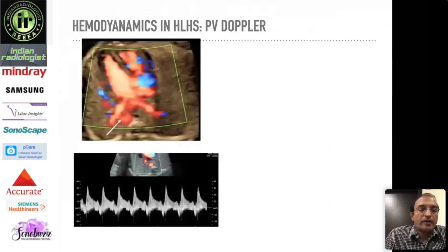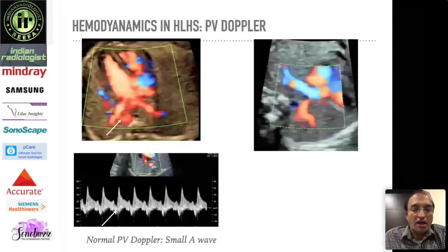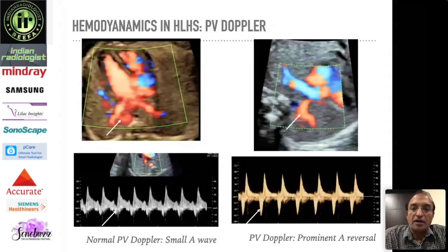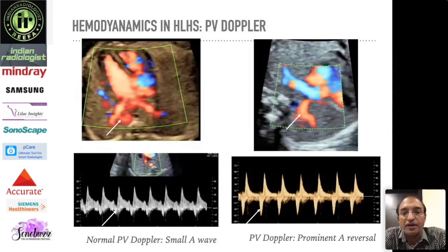In a normal pulmonary vein pulse wave Doppler, you see an S wave, a D wave, and a very small atrial reversal wave. However, in HLHS with a restrictive foramen ovale, pulmonary vein pressure is high, and the atrial reversal wave becomes very prominent — because in atrial systole, blood refluxes back into the pulmonary veins. This is a relatively simple Doppler technique that is useful in many conditions, and here it signals a very severe end of the spectrum.